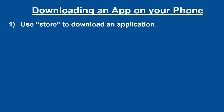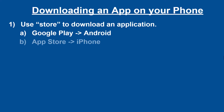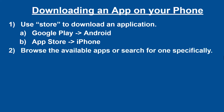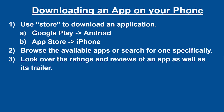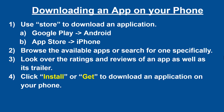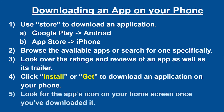Let's review. Inside of a store, you can download an application. For an Android phone, this store is Google Play, and for iPhones, it's called the App Store. Inside of each store, you can browse available apps or search for the one you want. On an app's specific page, you can look over ratings, reviews, or view a trailer. Click the Install button or Get to download an application onto your phone. Once downloaded, look for the icon on your home screen.